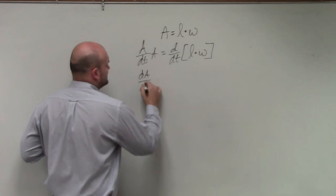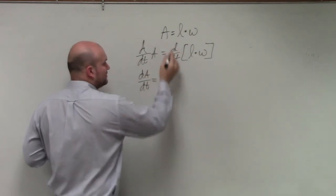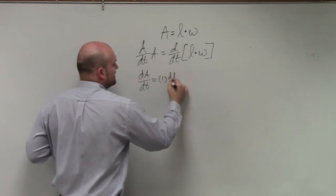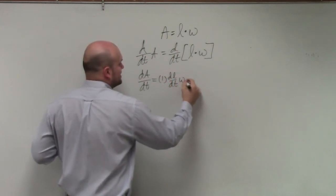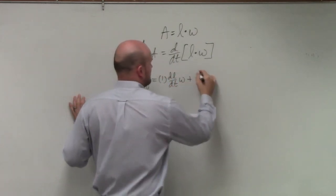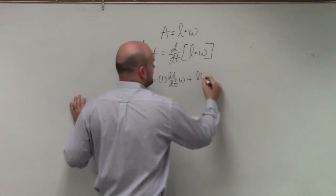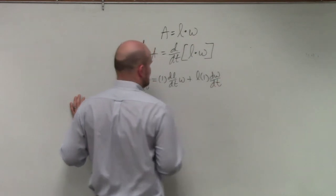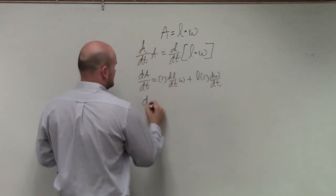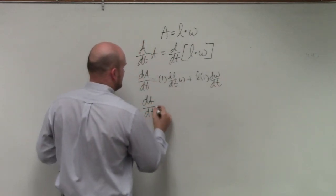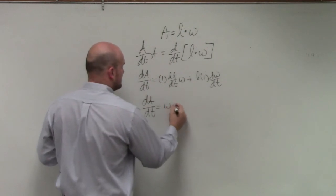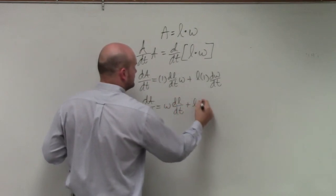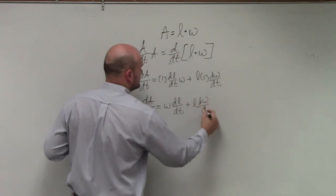Here we have dA over dt equals dl over dt times w plus L times dw over dt. And then obviously you can just say dA over dt equals w dl over dt plus L dw over dt.